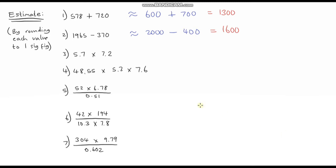The next one: approximately equal to 5.7, which rounds up to 6, multiplied by this which rounds down to 7. So 6 multiplied by 7 gives us 42.